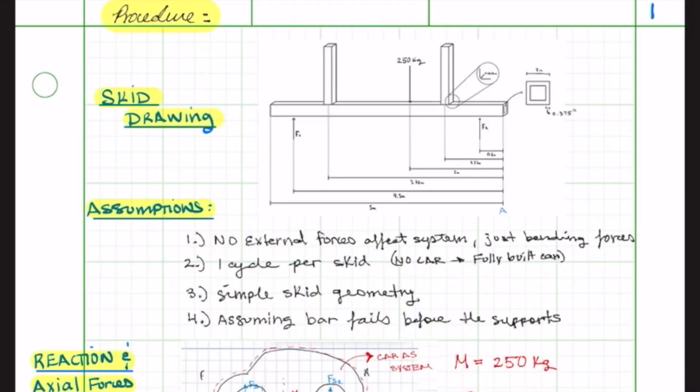Onto the calculations. Here we have the analysis of one of the two skids that are used in the process, where we have support forces and two transfer conveyor points, which we'll treat as reaction forces. The skid has a square structure 2 by 2 inches, where it's hollow with wall thickness of 3/8 of an inch.